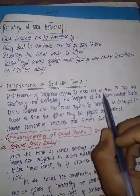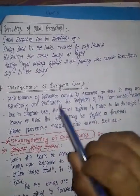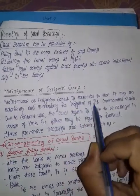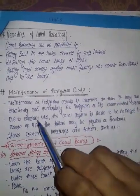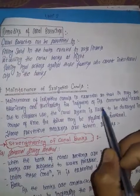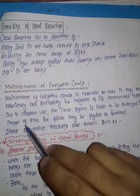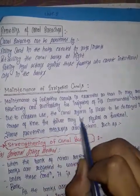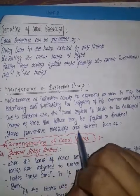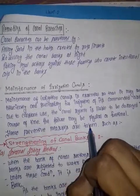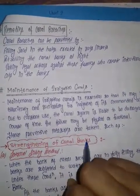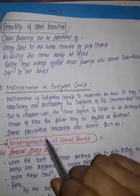Maintenance of the irrigation canal is essential so that it may function efficiently and successfully for irrigation of its commanded area. Due to constant use, the canal system is liable to be damaged in the course of time. The failure may be physical or functional, hence preventive measures are to be taken.